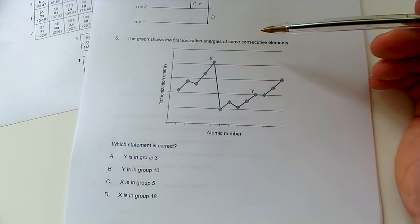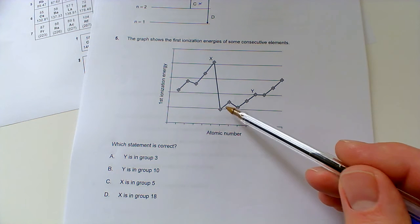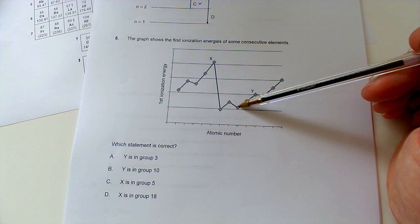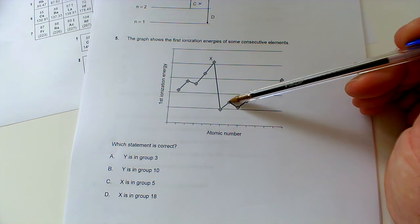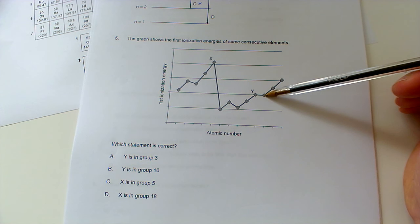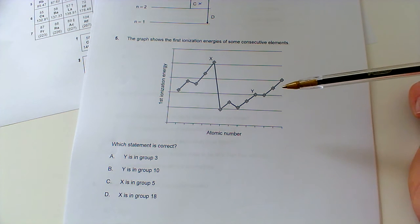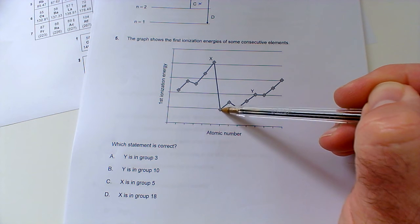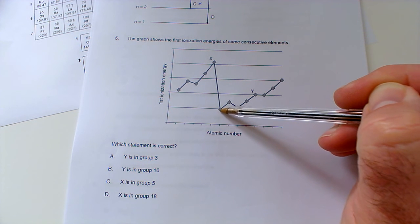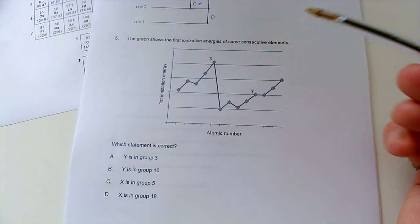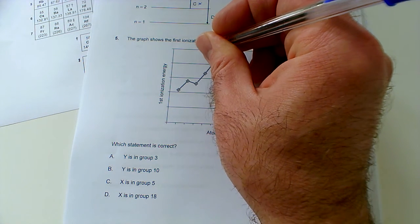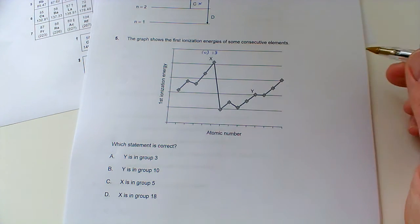Number five: the graph shows the first ionization energy of some consecutive elements. Now notice this 2, 3, 3 pattern which is quite easy to spot going across periods 2 and 3. Because there of course you're removing an electron from a P sublevel rather than an S, and here you're removing an electron from a doubly occupied P orbital as opposed to a singly occupied one. So what we look like is that this is a noble gas, and that's why we get this sharp drop in ionization energy, because we're having to start a new shell which is further from the nucleus.